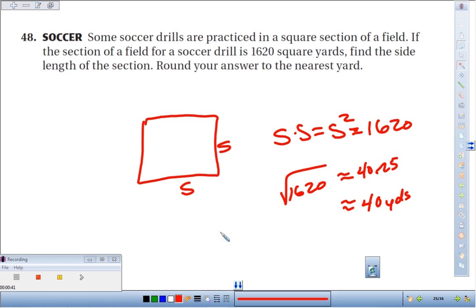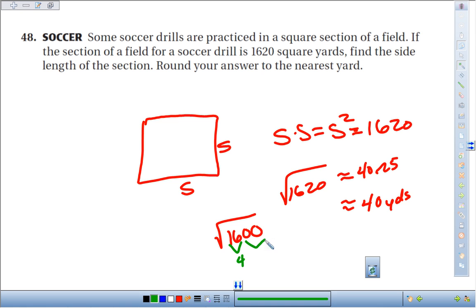Now, you also might have noticed that the square root of 1620 is really close to 1600, and the square root of 16 is 4, and two zeros comes from one zero, so there's another way of estimating it.